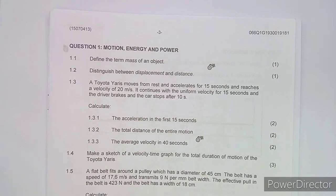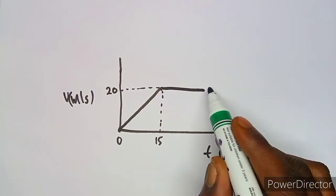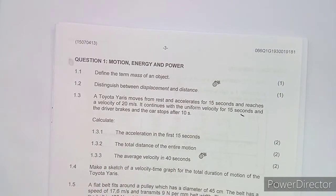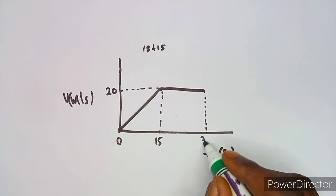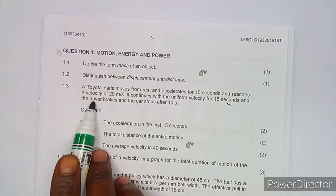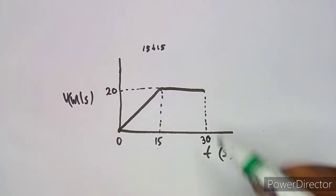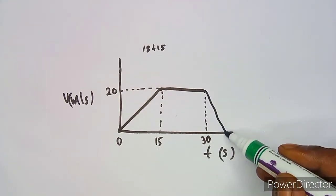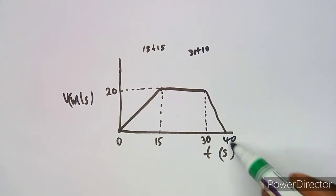It then continues at uniform velocity of 20 m/s for 15 more seconds, bringing us to t = 30 seconds. After that, the driver brakes and the car stops after 10 seconds, so velocity returns to zero at t = 40 seconds. This diagram helps us answer all the sub-questions.